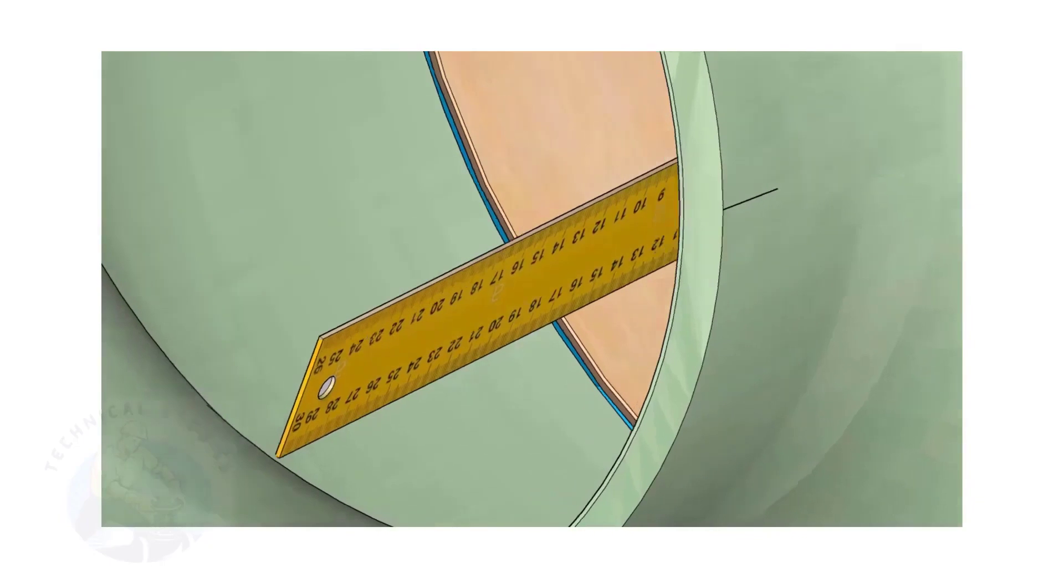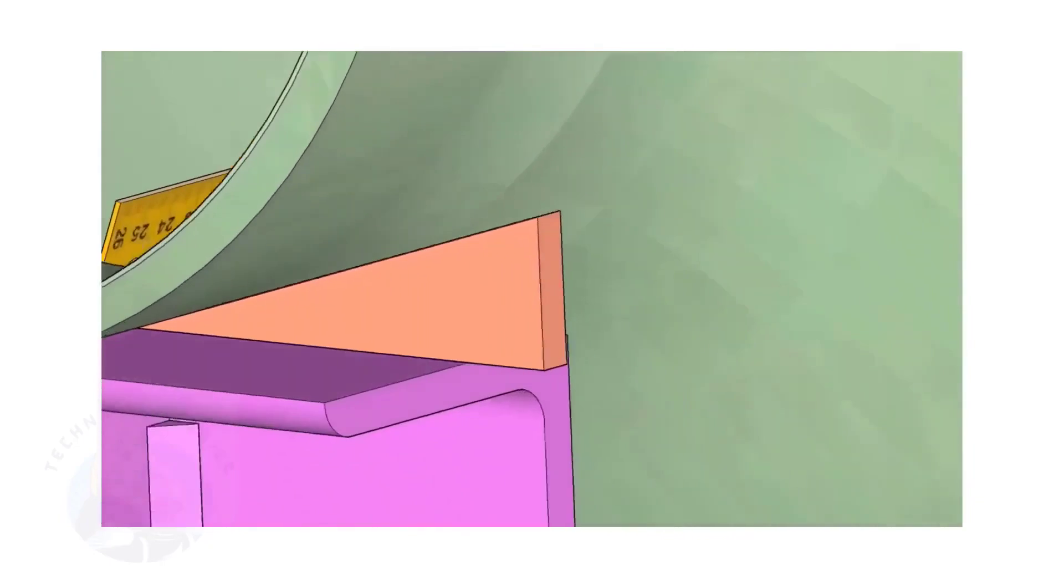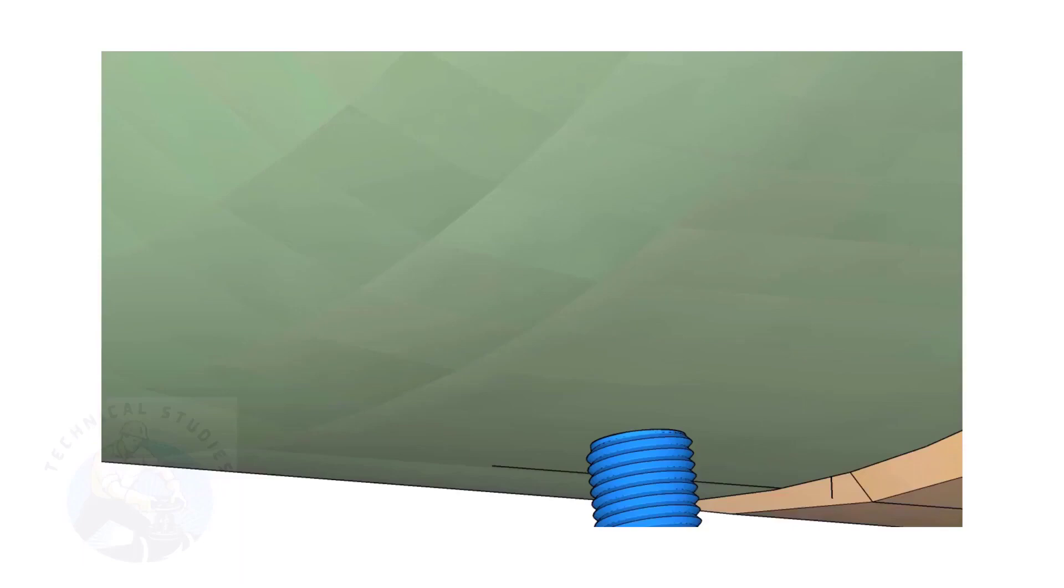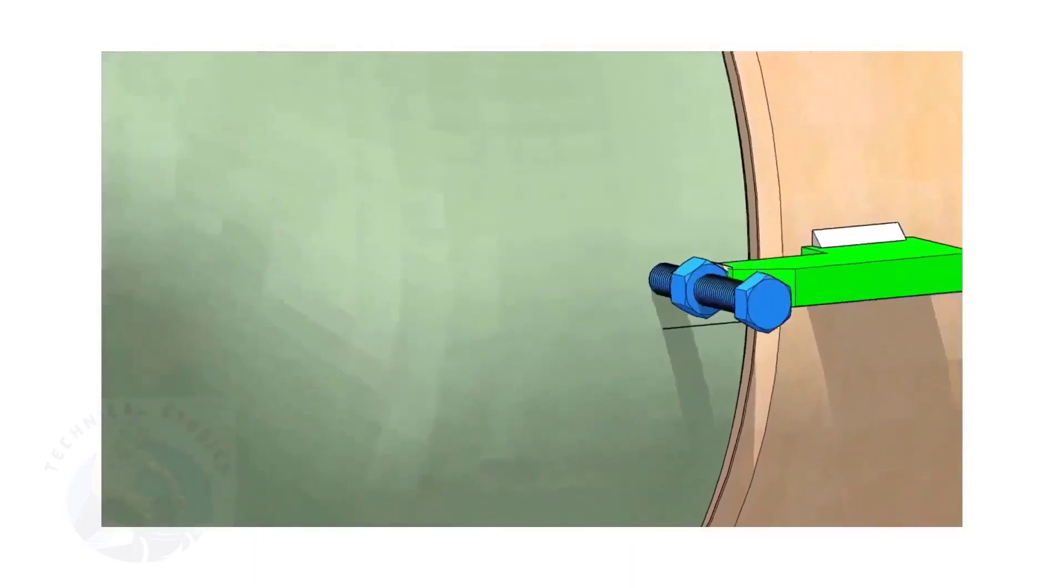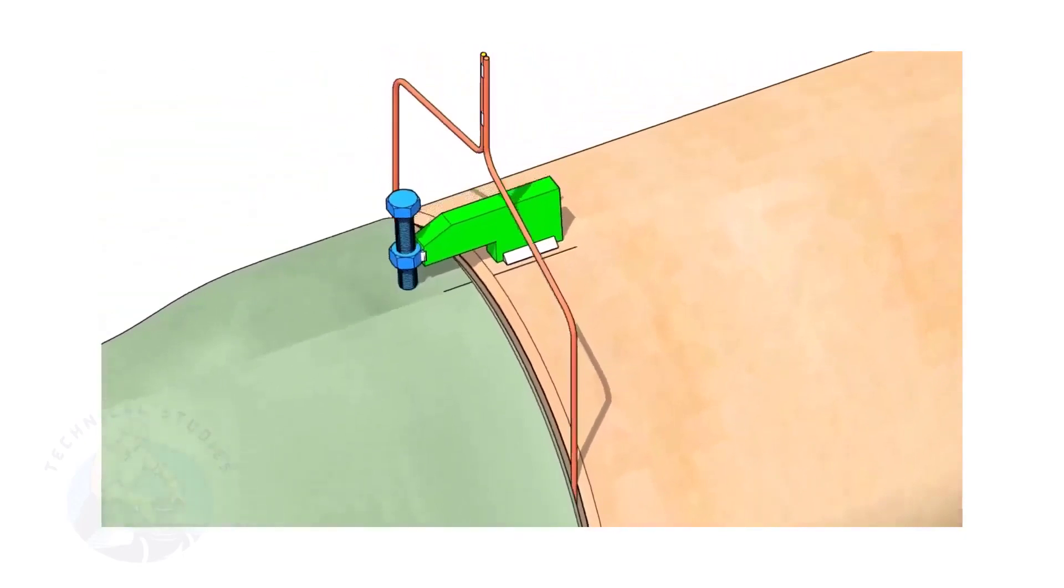By adjusting the jack bolts, correct the overlap of the joint inside the pipe. Now, tack weld on the top side of the joint.